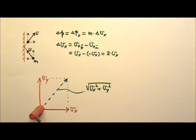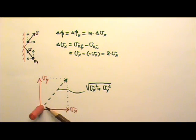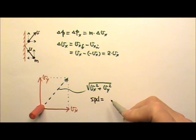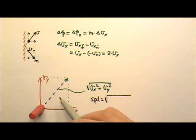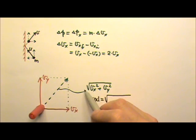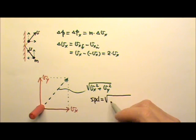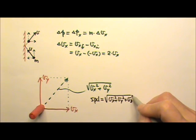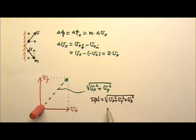For three-dimensional motion, the object would also have a z component of velocity, which means the total velocity would be slanted in three dimensions. So to find the speed, we'll have to apply the Pythagorean theorem one more time. The speed equals the square root of vx squared plus vy squared plus vz squared. This is the Pythagorean theorem for three dimensions.